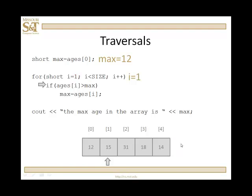For i equal to one, is ages one bigger than max? Yes, it is, so I'm going to assign it to max. Increment to two. I ask the question, is it bigger? Yes, so assign it. Up to three. Is ages three bigger than max? The answer is no. Go to four. Is that bigger? No. And I'm done. I output what the max of the array is.